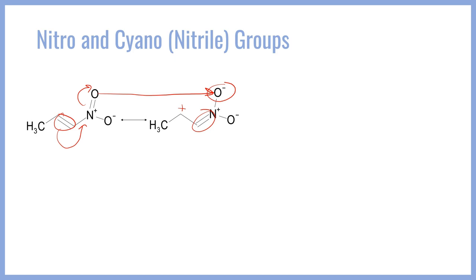The nitro group likes to have a dipole moment which points in the direction towards those two oxygens, which both carry strong negative character. And so the nitro group pulls electron density towards itself, and just like the carbonyl group, gives positive character to the carbon that is giving up electrons.